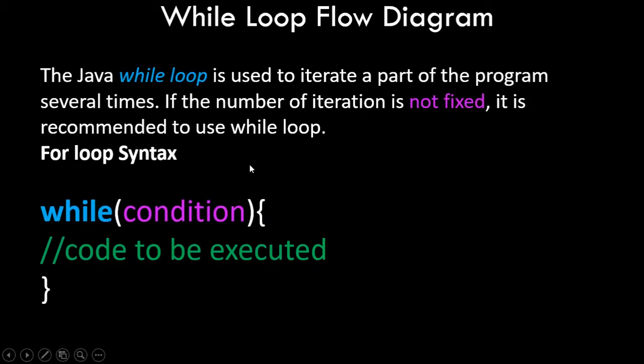The while loop is one more looping or iterative control statement, just like the for loop, but it is used in different cases. In Java, the while loop is used to iterate a part of the program several times. If the number of iterations is not fixed, it is recommended to use the while loop. This is the major difference: in a for loop we already know how many times we want to iterate, but in a while loop we do not know that.